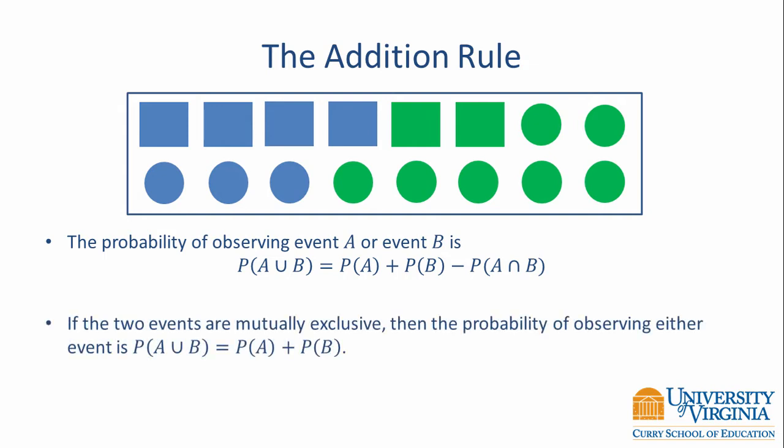If we can assume that the events are mutually exclusive, the addition rule simplifies. The addition rule becomes: the probability of A or B is equal to the probability of A plus the probability of B. This simplification is very handy, but we really need to know that the events are mutually exclusive in order to use it.